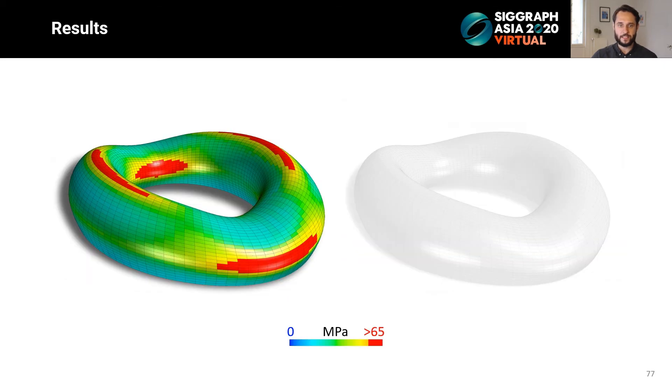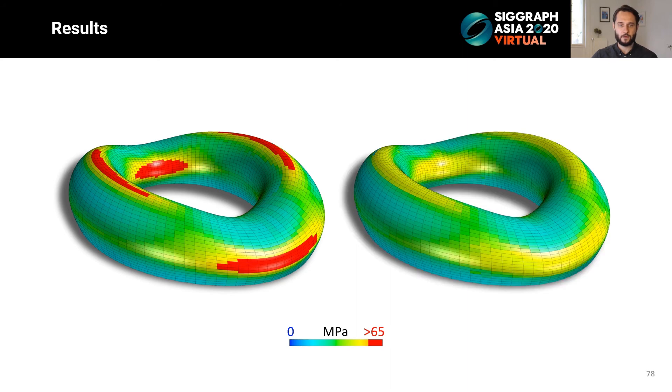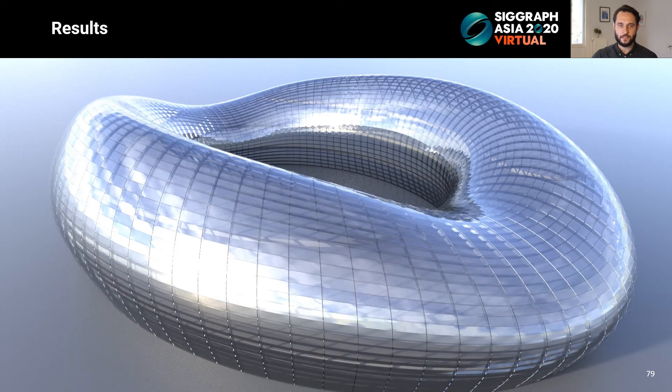Let us now examine this relatively simple but representative design. The initial panelization outputs breaking panels in challenging areas of both positive and negative curvature. Optimizing produces a design that has no breaking panels and thus can be realized exclusively with cold-bend glass. Here is a render of the end result.